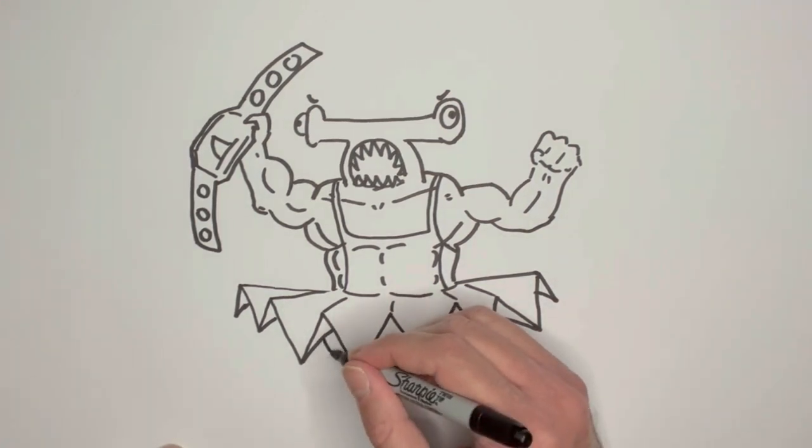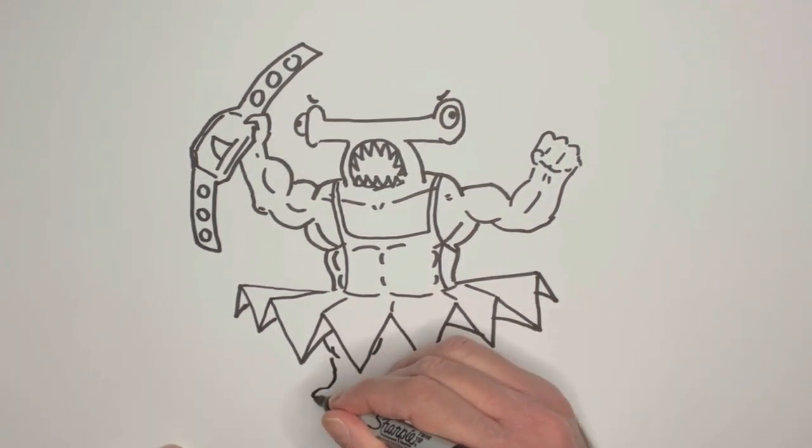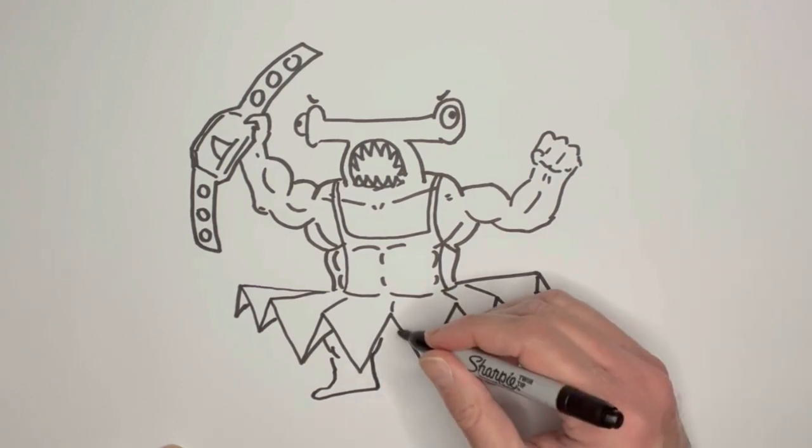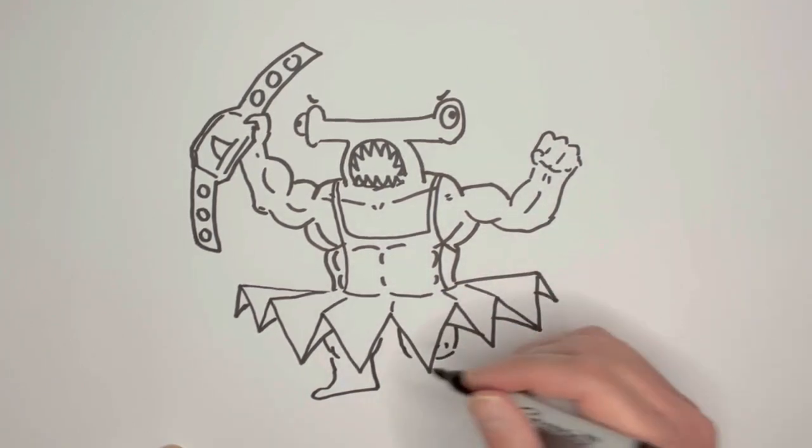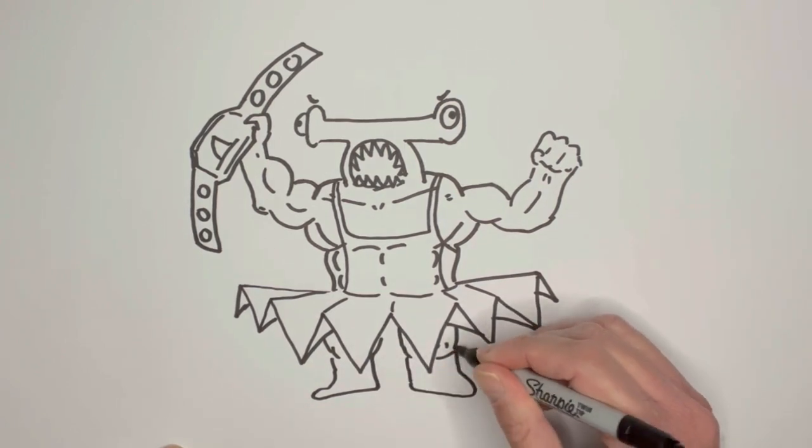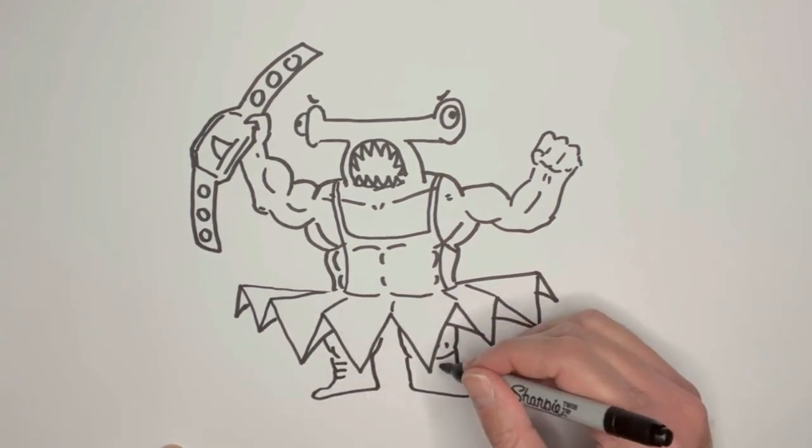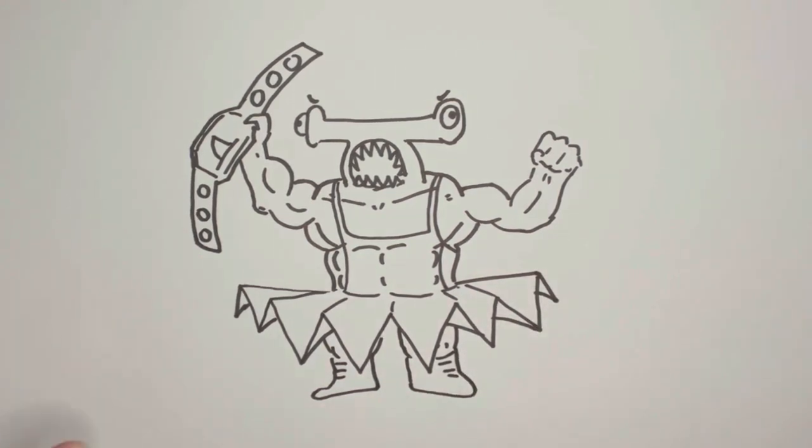And of course, we want to make sure that we have nice muscular shark legs coming into wrestling boots. I like to draw them a little stumpy so that you can really feel the muscular power of our wrestler up top. There we go. All right, beautiful.